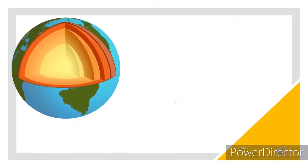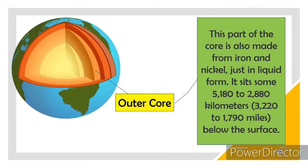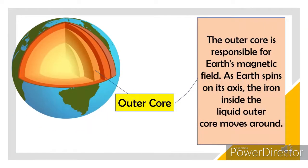The outer core is also made from iron and nickel, but in liquid form. It sits some 2,880 to 5,180 kilometers below the surface. The outer core is responsible for Earth's magnetic field. As Earth spins on its axis, the iron inside the liquid outer core moves around.